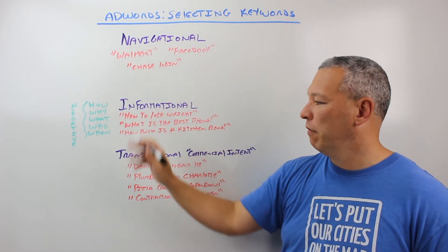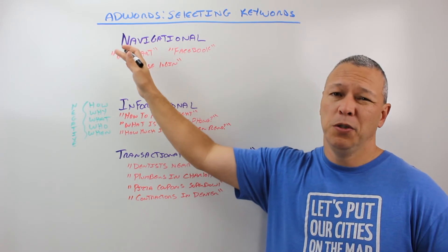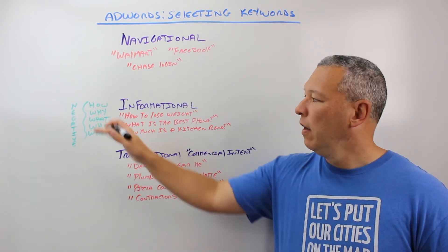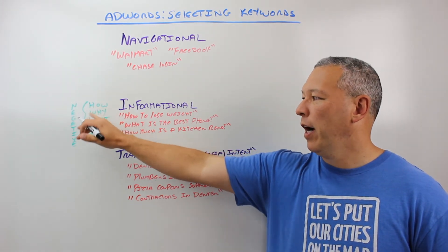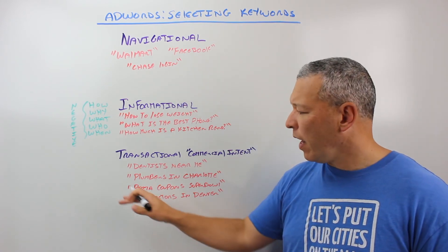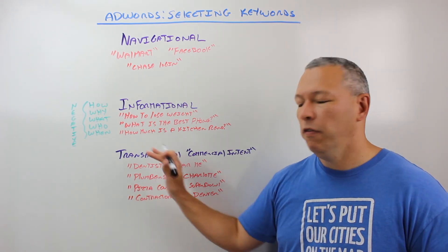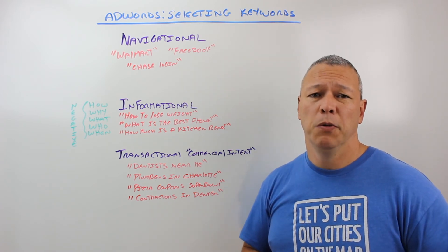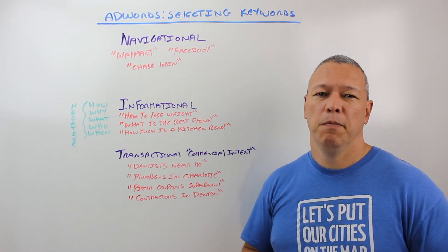To recap: we have navigational, informational, and transactional. Stay away from navigational - the really short one or two keyword search terms - because they're too generic to understand intent. For informational, stay away from those for the most part. Use negative keywords to remove how, why, what, who, and when search terms so your ads don't get triggered and eat up your budget. Focus on high commercial intent transactional search terms - those are the ones you want to focus on for your business. Hopefully that was helpful. You'll be ready to start doing keyword research and building your campaign. You can learn more at threebugmedia.com.